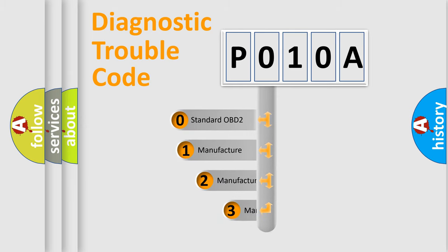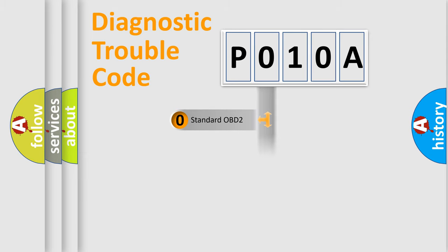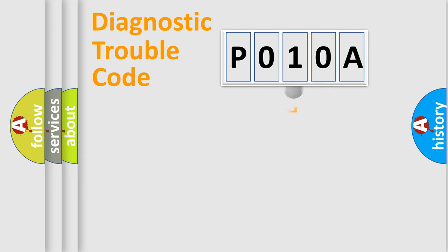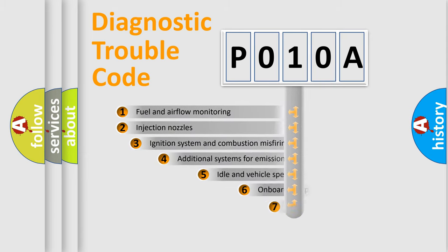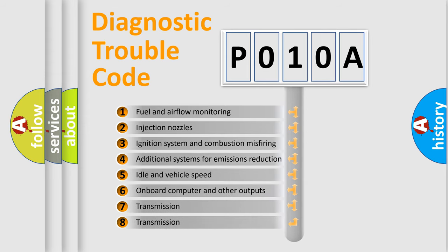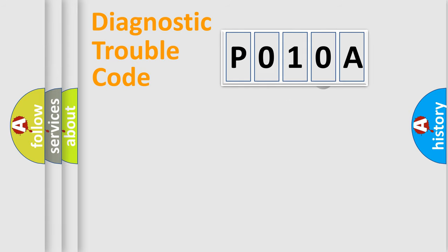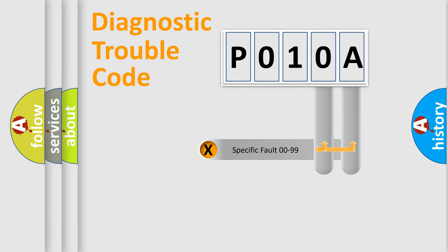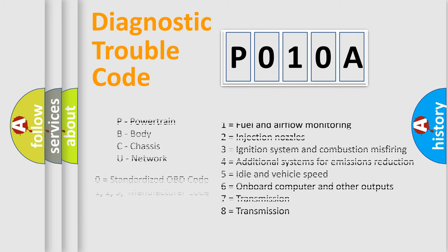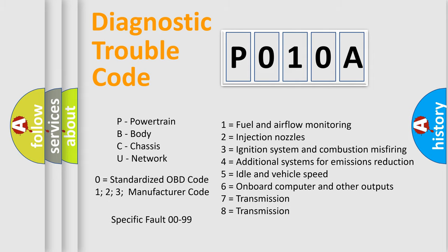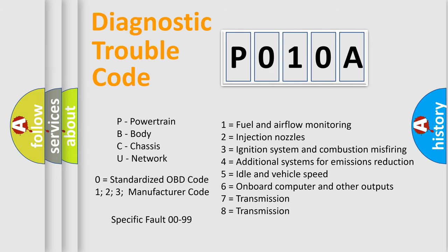If the second character is expressed as 0, it is a standardized error. In the case of numbers 1, 2, or 3, it is a more specific expression of a car-specific error. The third character specifies a subset of errors. This distribution is valid only for the standardized DTC code, and only the last two characters define the specific fault of the group. Such a division is valid only if the second character code is expressed by the number 0.